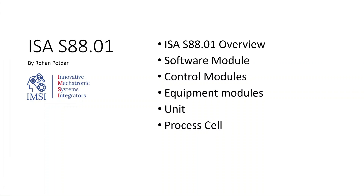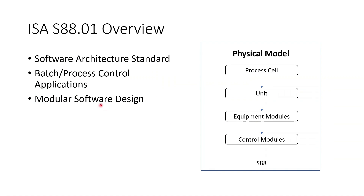Let's have a look at the standard overview. ISA S88 is a software architecture standard — and it's not a software standard — which means it tells you how you should structure your software and not how to write the software. It is designed for batch and process control applications, and that's going to make the application more modular in nature, enabling you to scale it easily. The architecture shows that you should build your software in layers, as you can see in the picture. Each of these layers represents a category of a software module.